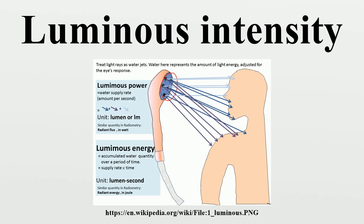In photometry, luminous intensity is a measure of the wavelength-weighted power emitted by a light source in a particular direction per unit solid angle. Based on the luminosity function, a standardized model of the sensitivity of the human eye, the SI unit of luminous intensity is the candela, an SI base unit.